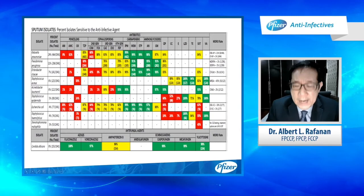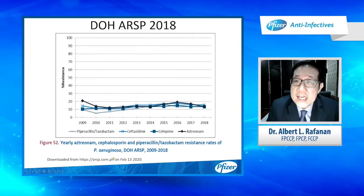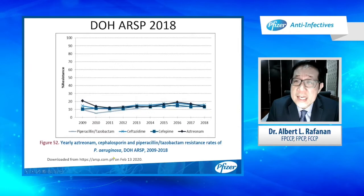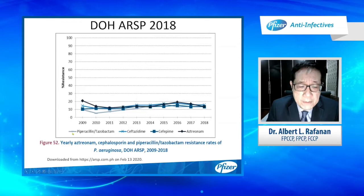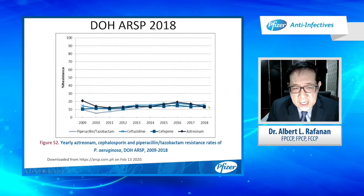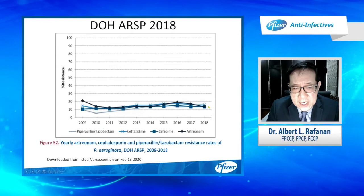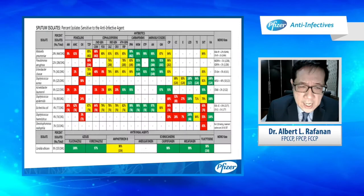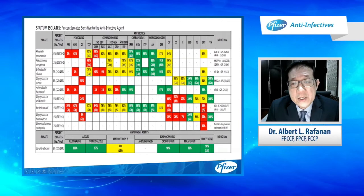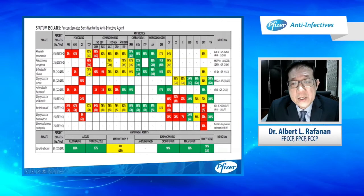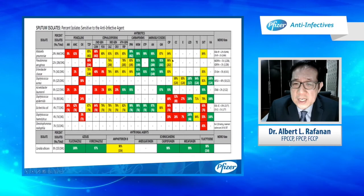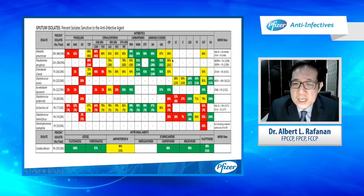The DOH-ARSP 2018 guidelines show that Pseudomonas aeruginosa is still fairly sensitive to our workhorse antibiotics. For piperacillin-tazobactam, the resistance pattern is still less than 80%. In our hospital, we have a higher resistance of Pseudomonas aeruginosa to piperacillin-tazobactam at 69%, with third-generation cephalosporins at 76–78% resistance. Carbapenems remain effective for our Pseudomonas aeruginosa, and ciprofloxacin is still 86% sensitive for Pseudomonas aeruginosa in our locality.